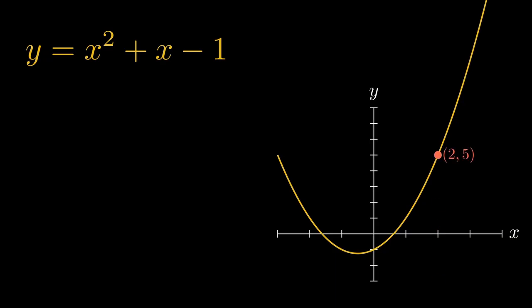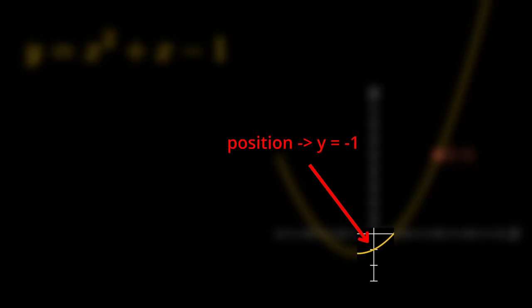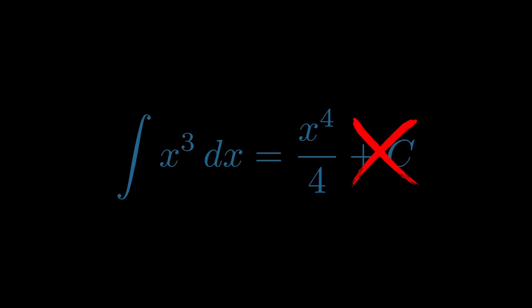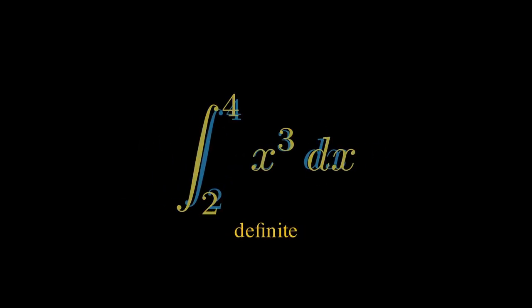That's how we recover the exact curve. And without that extra piece of data, you'd only know the shape, not the position. Now, there's one special case where this constant quietly disappears. When we now move from indefinite integrals to definite ones. Suddenly, you don't need plus c anymore, and that's not a coincidence. So the question is, how can you remove the constant without breaking the maths?